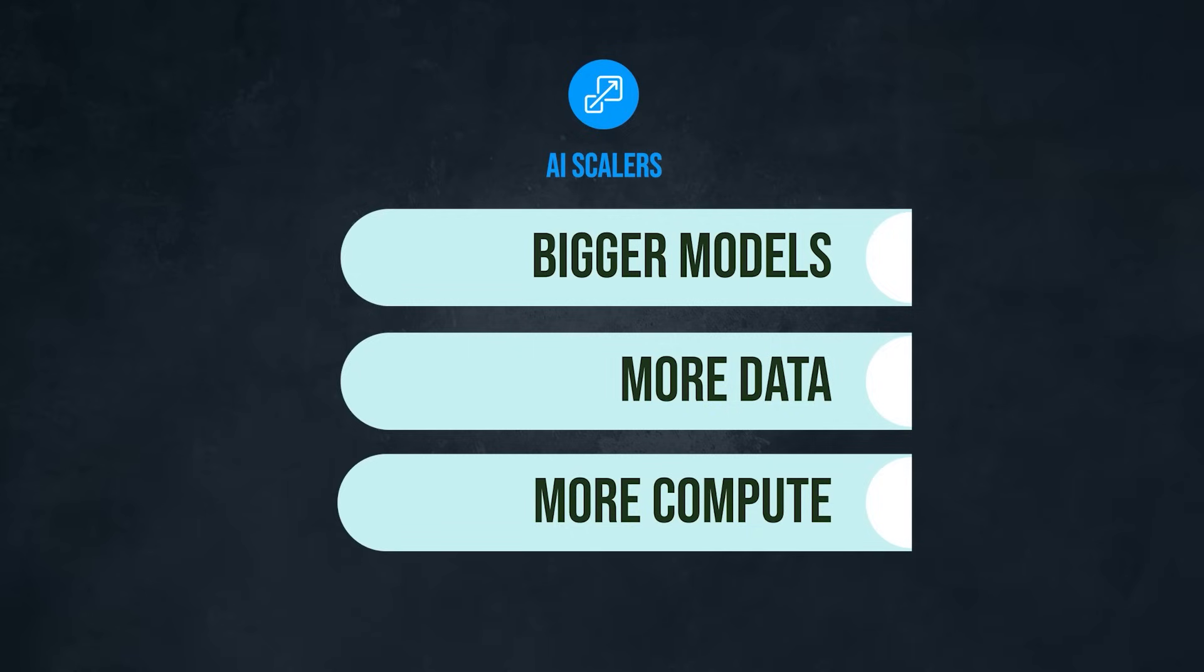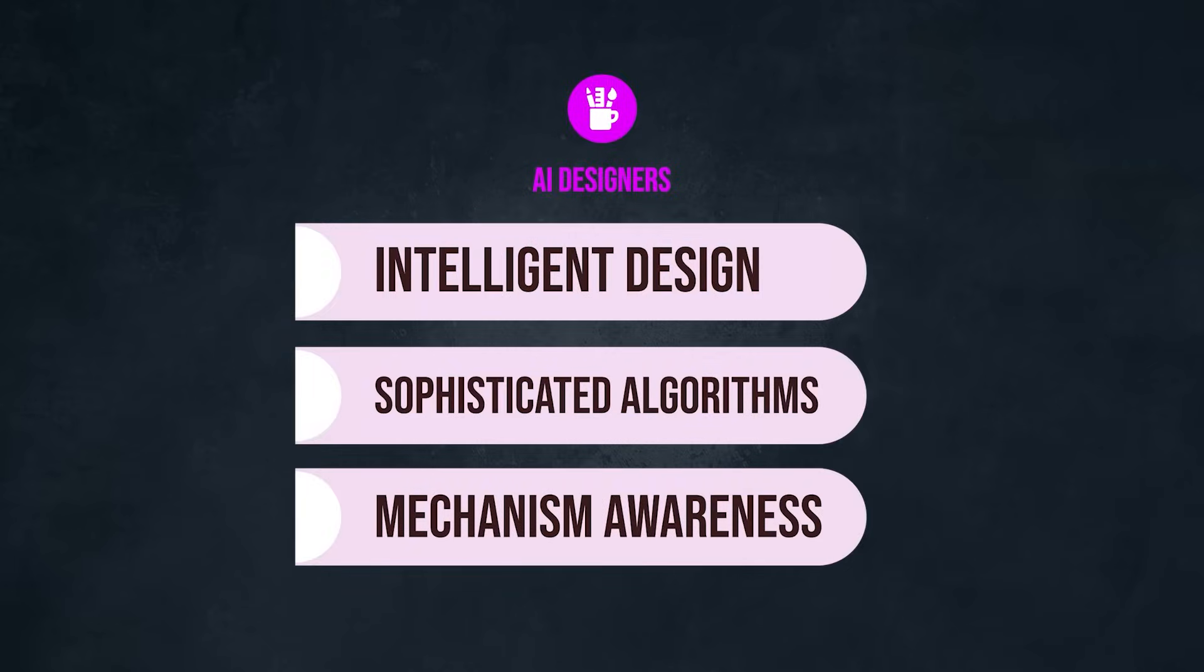They believe bigger models, more data, and compute are always the answer, and that human design is just in the way. The less human decision-making, the better the AI will get. On the other hand, you have the AI designers, who argue that intelligent design and sophisticated algorithms are everything, and blindly scaling without understanding the underlying mechanisms will lead us to a dead end. Most AI scientists deeply understand both sides of the argument, but it's a matter of priorities.